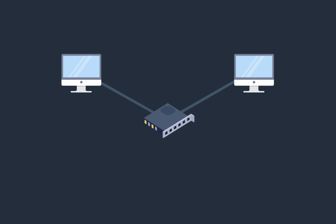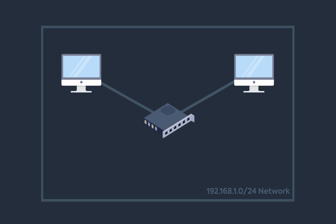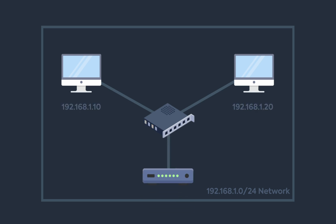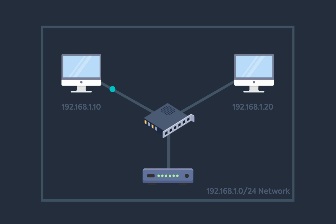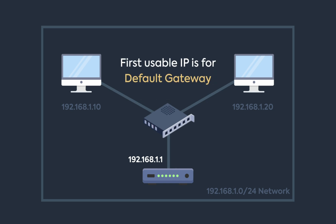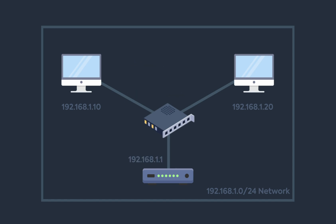Let's build our network first. We take a switch and connect it to PCA. We assign IPs from the 192.168.1.0 network: PCA gets 192.168.1.10 and PCB gets 192.168.1.20. Our router is connected to the switch and acts as the default gateway. The default gateway IP is set to 192.168.1.1 — it's common practice to assign the first usable IP to the default gateway. At this point, our local network is complete.